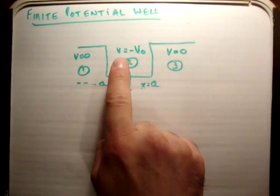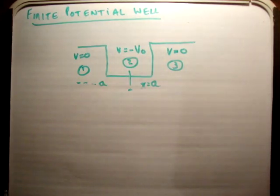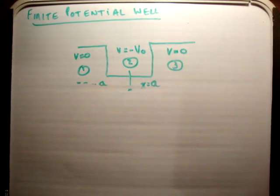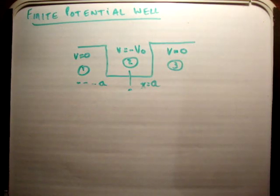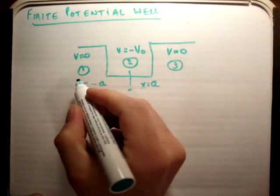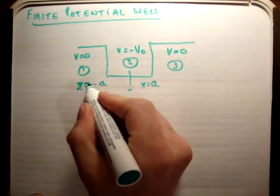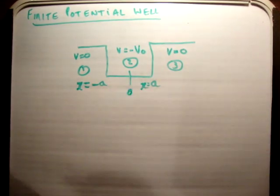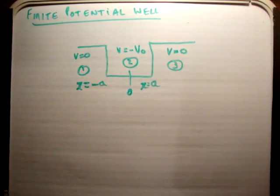So I've sketched the problem here, and we're going to say this time that we're going to have a negative potential in our well, so V is equal to negative V₀. Outside the well the potential is equal to zero. We have x equals negative a and x equals a, so the width of the well is 2a, and it's centered at the origin.